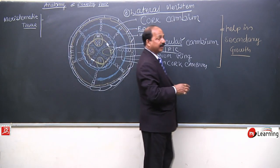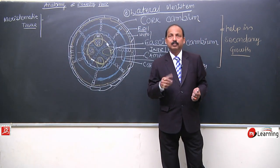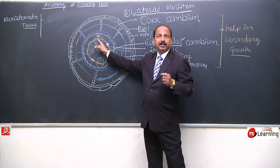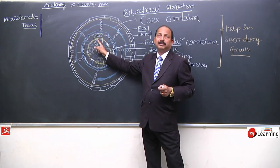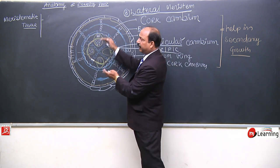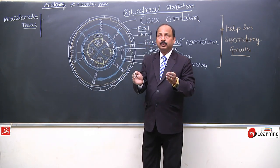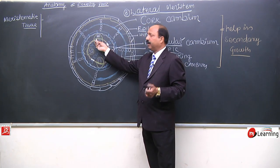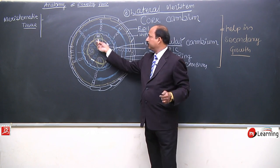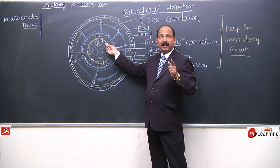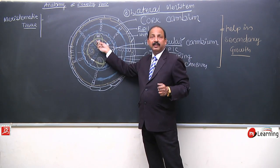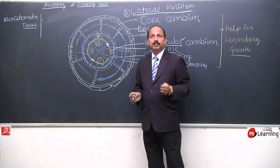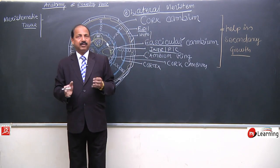So the examples of lateral meristem we know are: First — fascicular cambium, found inside the vascular bundle, lateral in position. Second — inter-fascicular cambium, lateral in position. Third — the entire cambium ring, lateral in position. And cork cambium, lateral in position. These are the examples of lateral meristem.